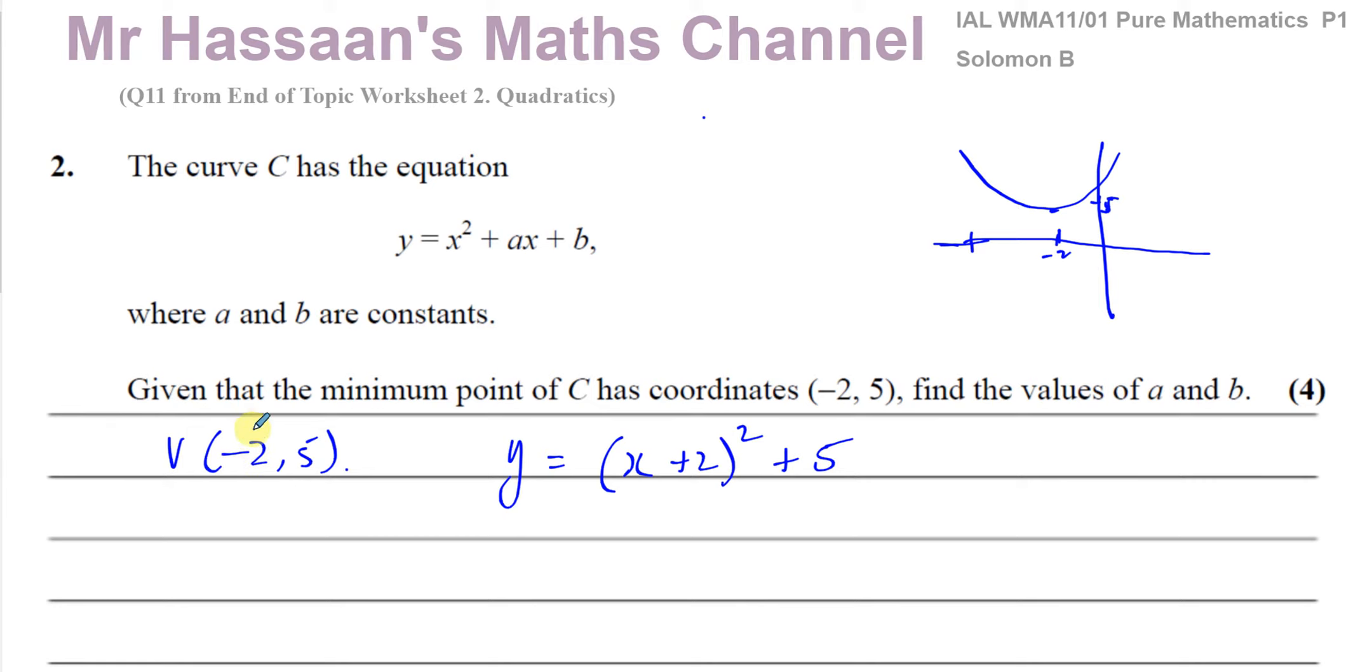That's why x equals minus 2 is the x value of where the vertex is. So when you see a question like this, you know the vertex and you want to find the equation in this form, you can write it in this completed the square form, and then from there you can just modify it to that.